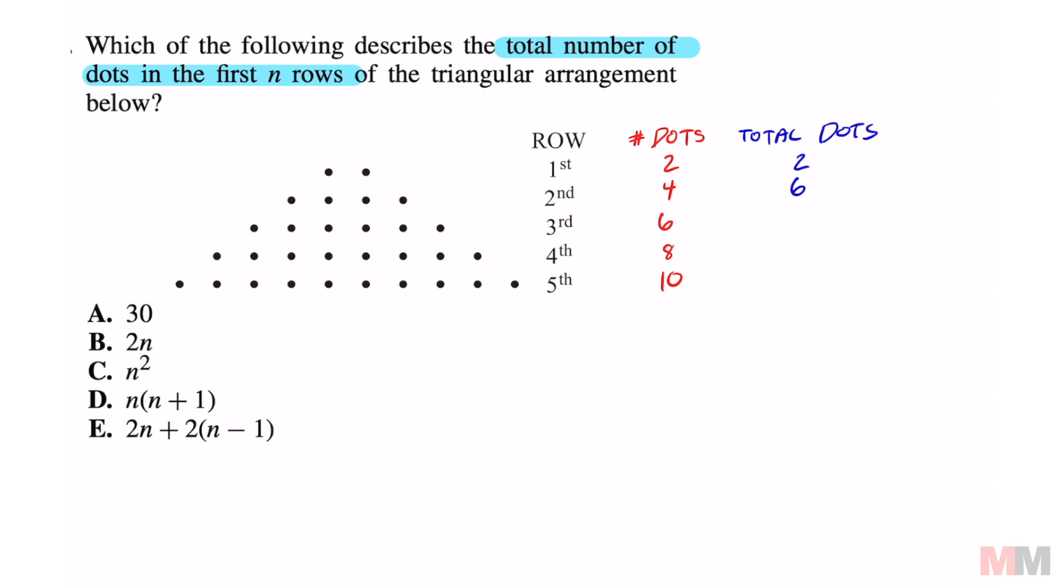Instead of counting all these dots and going crazy, you could just look at the numbers right here. All those dots is the same thing as adding 2 + 4 + 6, which equals 12. Then we continue finding the total every time we get to a new row. So add those up and you get 20.